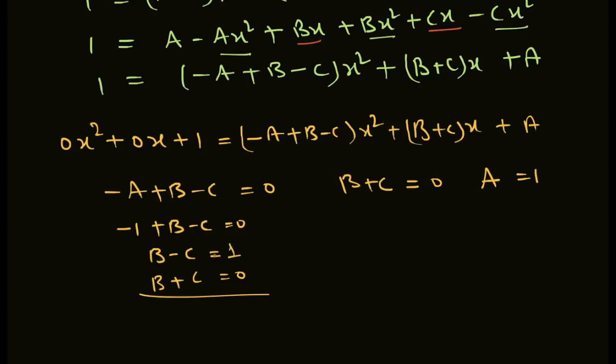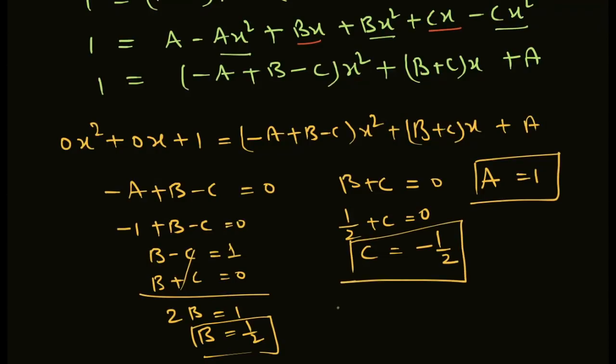Using elimination method: B equals 1 and B minus C equals 1 gives 2B equals 1, so B equals 1 by 2. Putting B equals 1 by 2 into B plus C equals 0 gives C equals negative 1 by 2. A equals 1, B equals 1 by 2, and C equals negative 1 by 2.